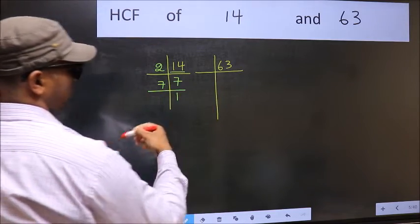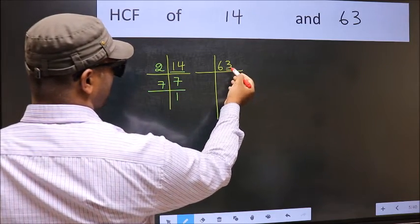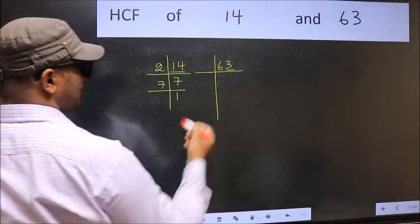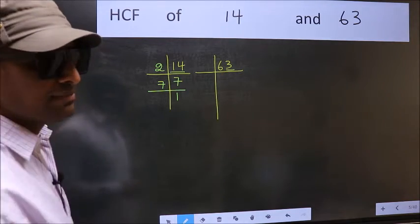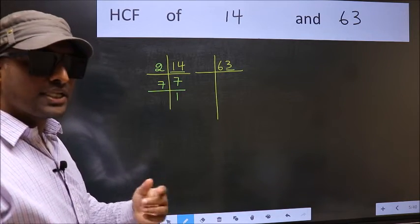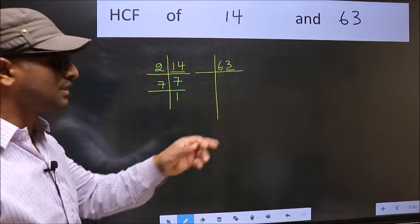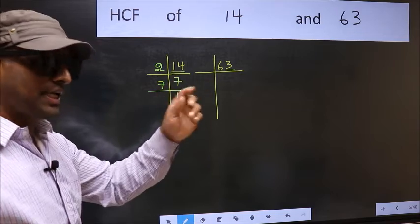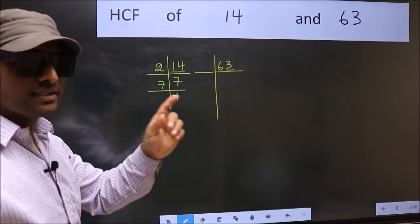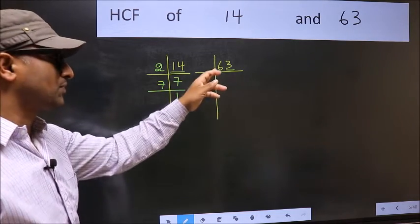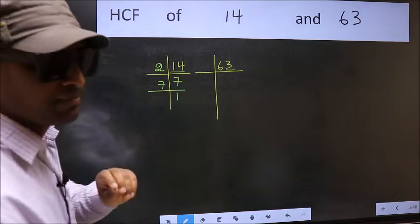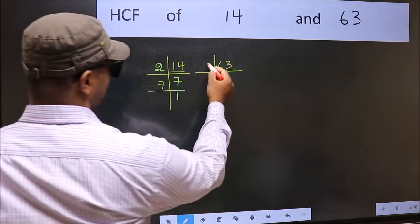Last digit 3, not even, so not divisible by 2. Next prime number is 3. To check divisibility by 3, add the digits. 6 plus 3 we get 9, and 9 is divisible by 3, so this number is also divisible by 3. So take 3.